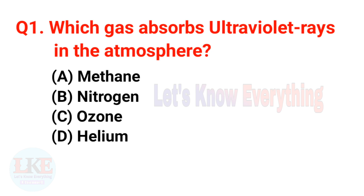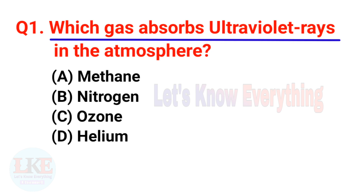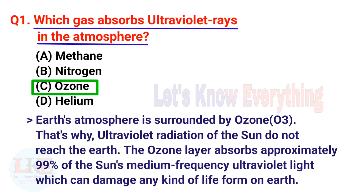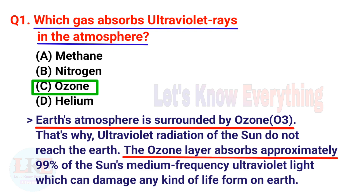Question 1: Which gas absorbs ultraviolet rays in the atmosphere? A) Methane, B) Nitrogen, C) Ozone, D) Helium. The right answer is option C, Ozone (O3). Earth's atmosphere is surrounded by ozone, which is why ultraviolet radiation from the sun does not reach the earth. The ozone layer absorbs approximately 99% of the sun's medium frequency ultraviolet light, which can damage any kind of life form on earth.